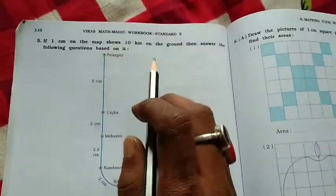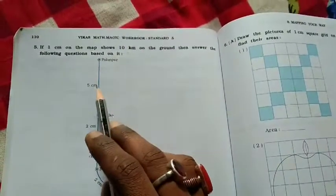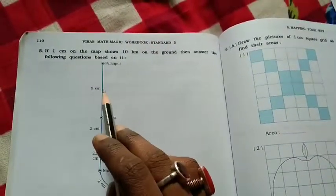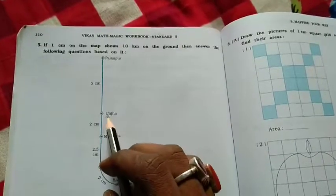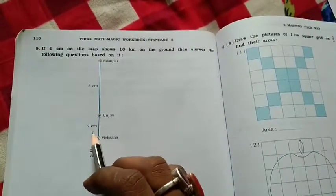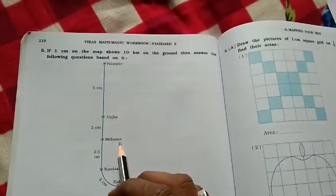Palanpur, 5 centimeters. Unja, 2 centimeters. Mahesana. Nandasan. Kalol. Adalaj, and Subhash Bridge, Ahmedabad. Okay.